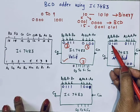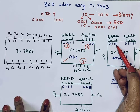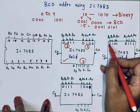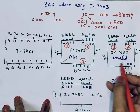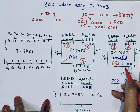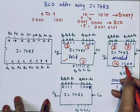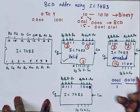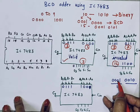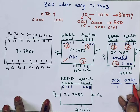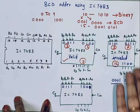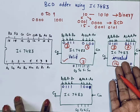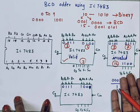My second condition: first number is 0101 (5) and second number is 0111 (7). The answer is 12. Is it a valid BCD number? No. The BCD equivalent of 12 is 0001 for 1 and 0010 for 2. So the answer is invalid BCD, and since this is a binary adder IC it will generate binary addition.